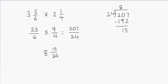Now you see that 15 over 24 doesn't look like it's in the simplest form — I can still reduce this fraction. 15 and 24 are both divisible by 3. So let's divide both by 3, making sure whatever you do to the numerator you do the same to the denominator, so we don't change the value of the fraction. 15 divided by 3 gives me 5, and 24 divided by 3 gives me 8.